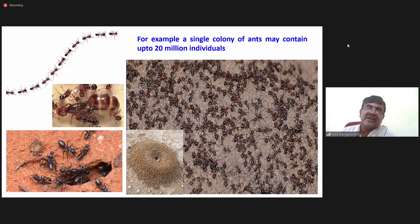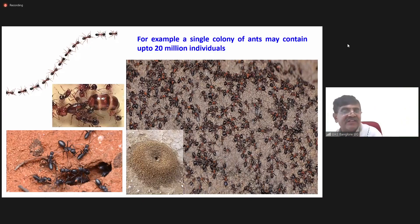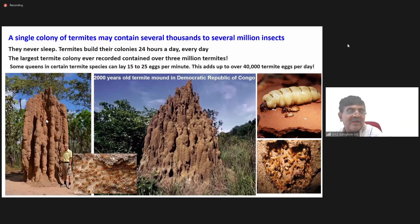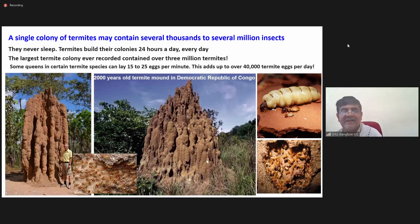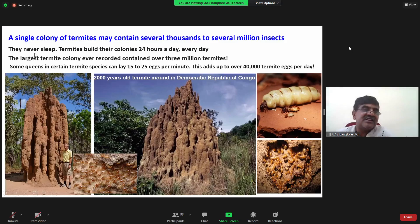Houses or buildings built by termites: in this diagram you can see the queen termite, the king termite and the worker termite. In a single colony of termites you will find several thousand to several million insects. Termites are very hardworking insects — they never sleep and build their colonies 24 hours a day.